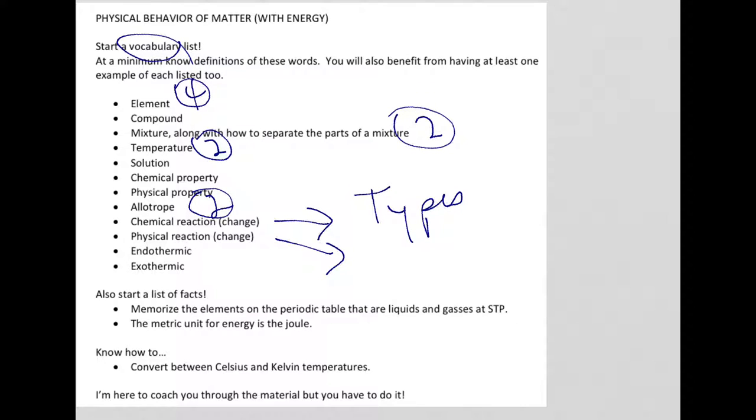As far as facts, you need to know the elements from the periodic table that are your liquids. There's only two of them, and then that are your gases, which obviously are the noble gases in group 18. And then there's just a handful of other ones.